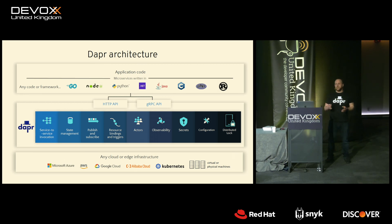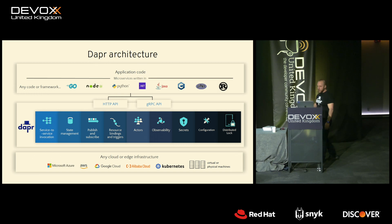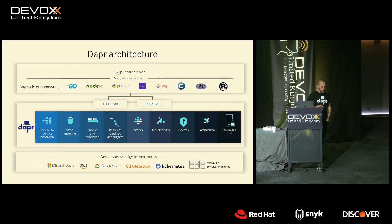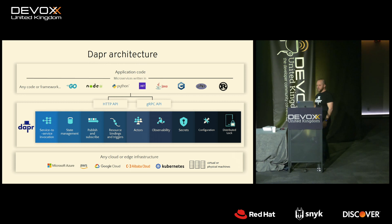If you choose HTTP, you may not have any dependency on DAPR in your application — you can use your language's native HTTP capabilities. Or if you want to use gRPC, you can use one of the SDKs provided for your language. Behind the scenes, DAPR is configured and relies on some kind of infrastructure, such as a key-value store, message broker, or other infrastructure.